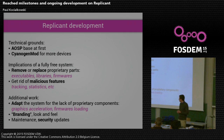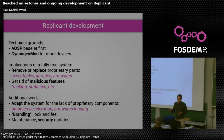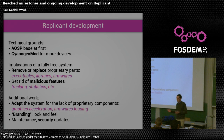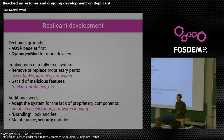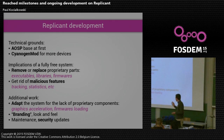A non-trivial part is adapting the system for the lack of non-free components, because most of the Android code we get expects that non-free software is in place. It expects, for instance, that we have 3D drivers. But we don't, because 3D drivers on those devices are non-free, so we get rid of them. But the rest of the system expects to be able to use them. So we have to find all sorts of tricks to get it to still be usable and to still work. That's a real challenge. And it's the same with firmware.